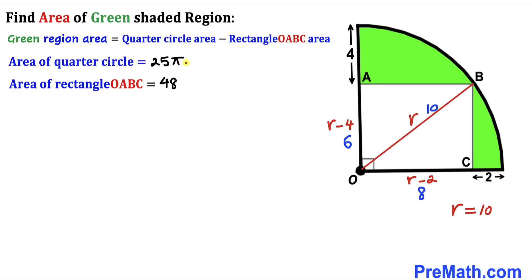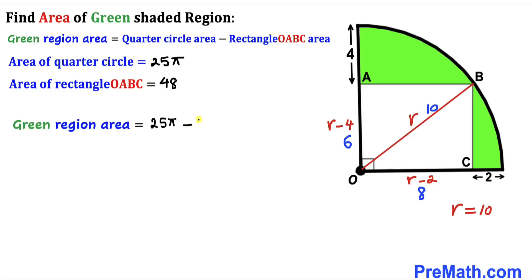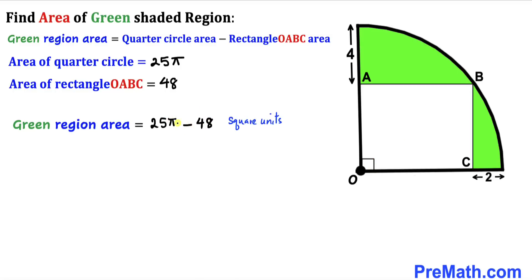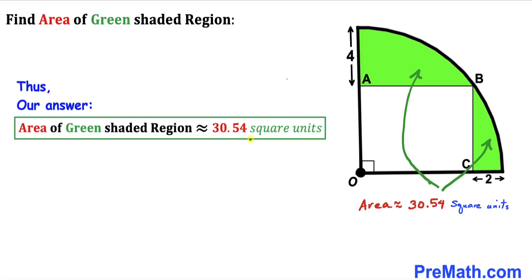Filling in the values: the green shaded region area equals the quarter circle area, which is 25 pi, minus the rectangle area, which is 48. Substituting the value of pi, the green shaded region area is approximately equal to 30.54 square units. That is our final answer.